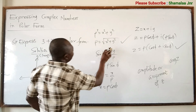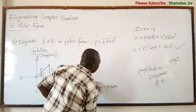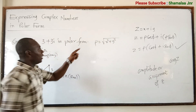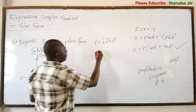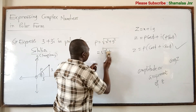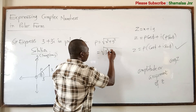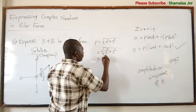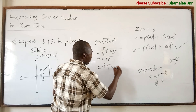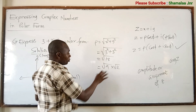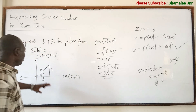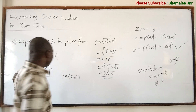To get rho, use the formula: rho equals square root of x squared plus y squared. In this case it is square root of 3 squared plus 3 squared, which is square root of 9 plus 9, equals square root of 18. This simplifies to square root of 9 times square root of 2, which equals 3 root 2.